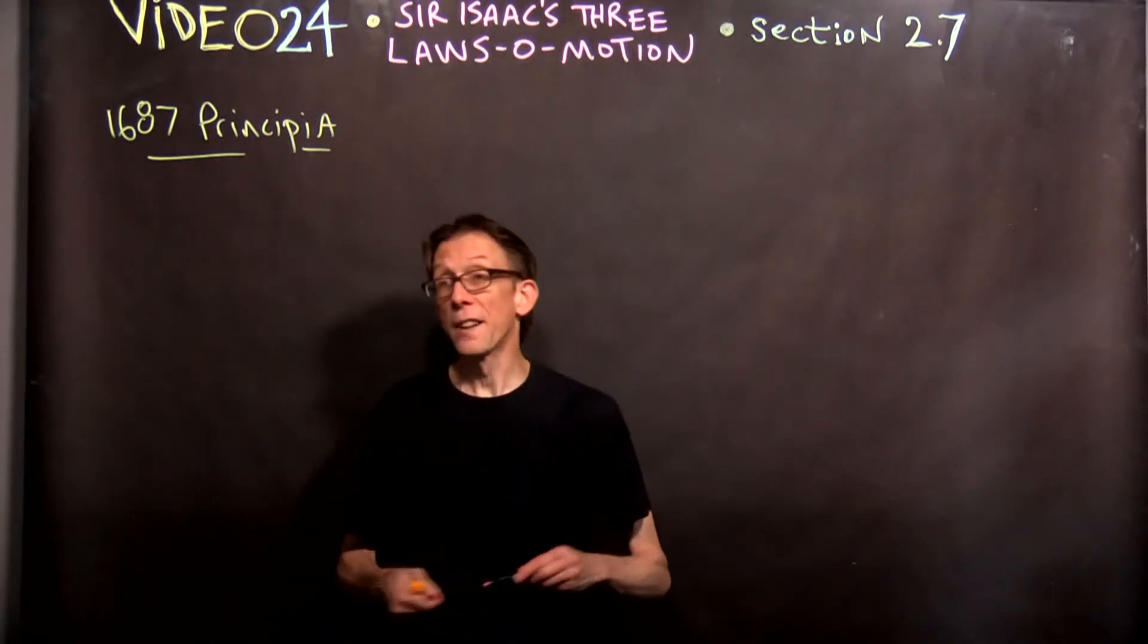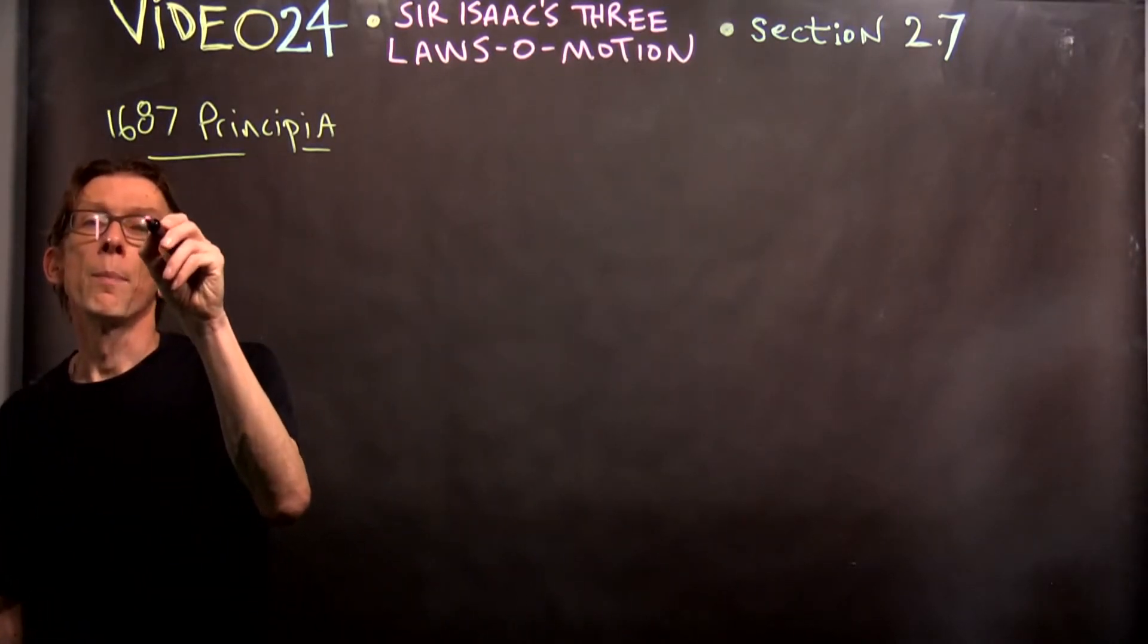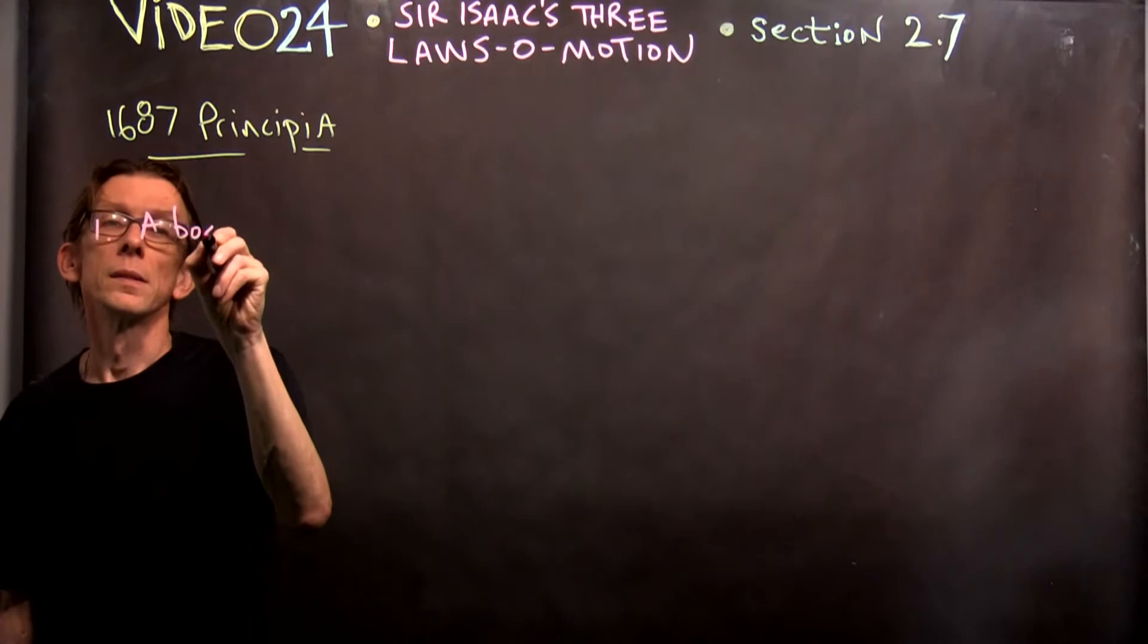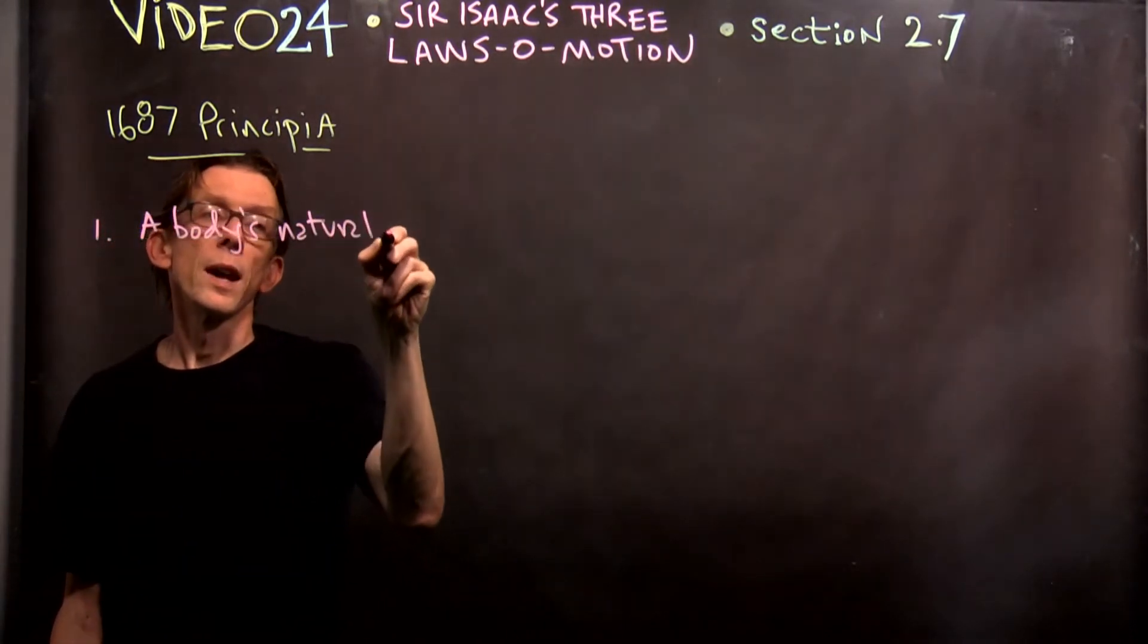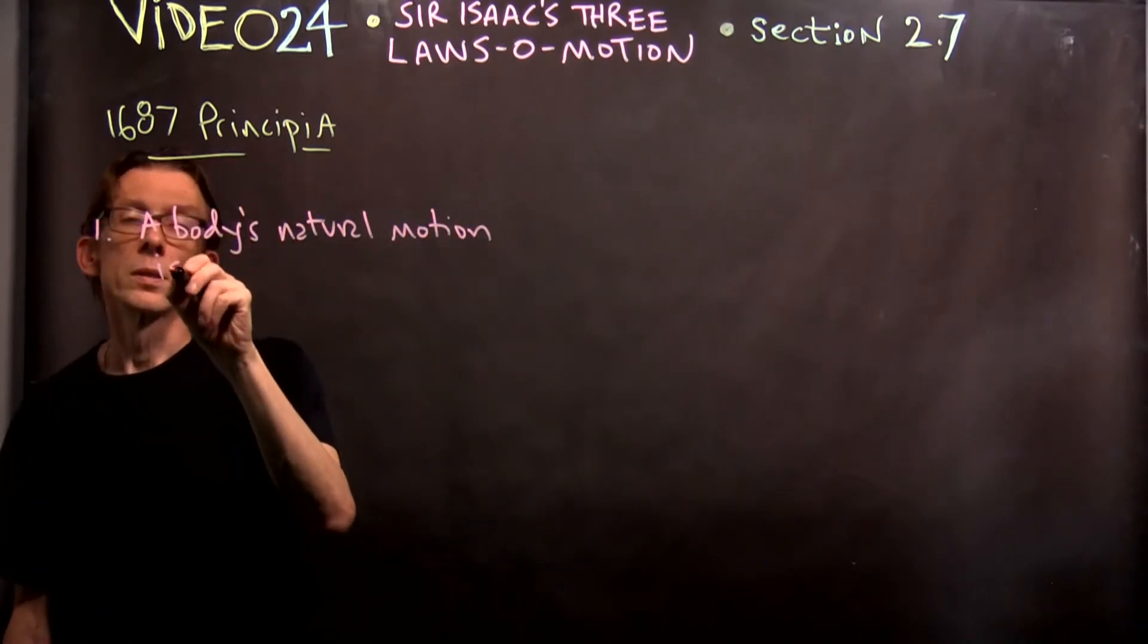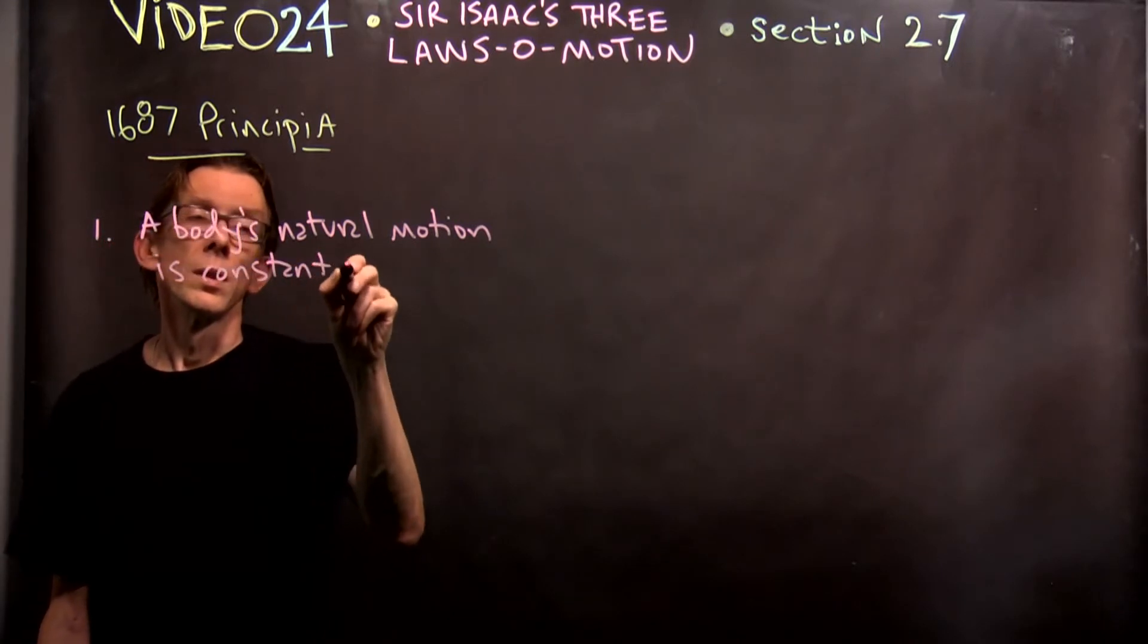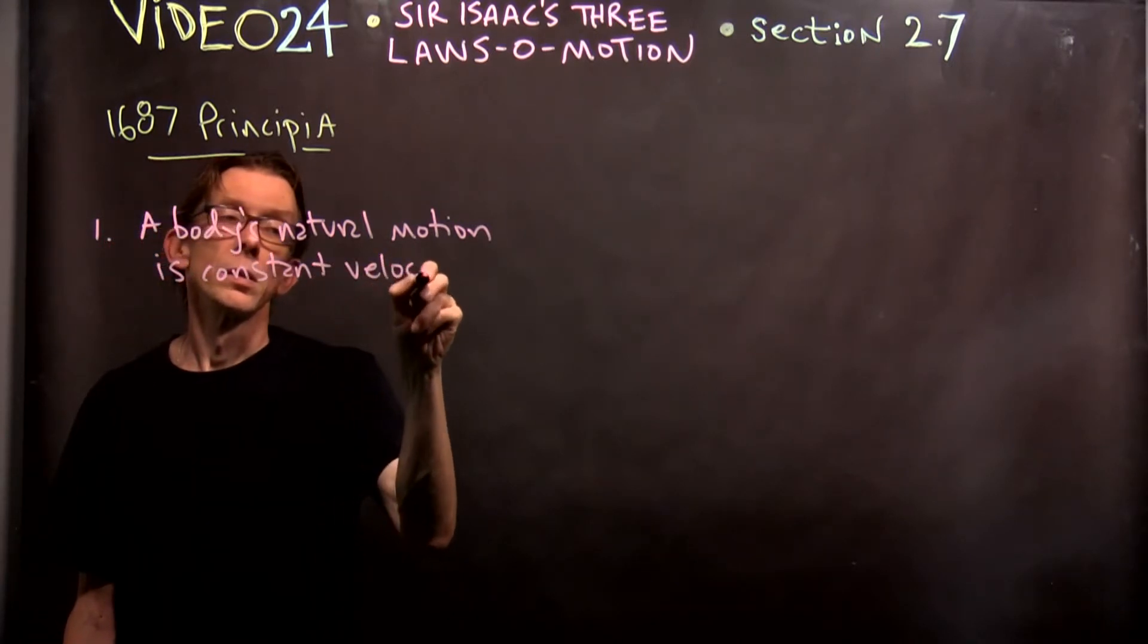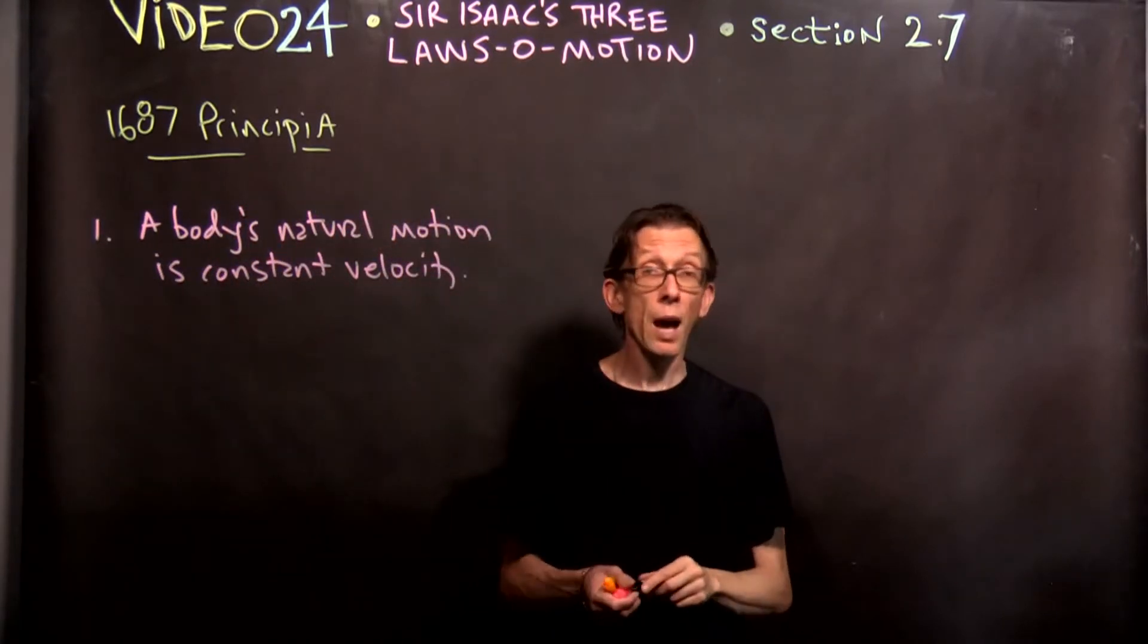Okay. The natural state of things, the natural motion, a body's natural motion, is constant velocity. Could be zero, but might not be zero.